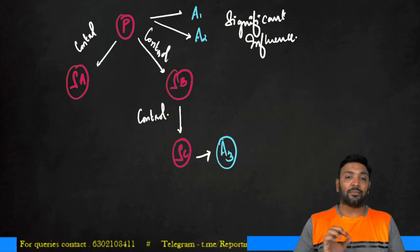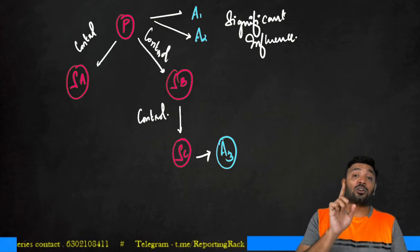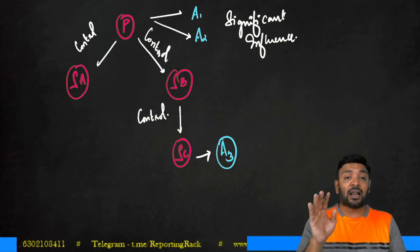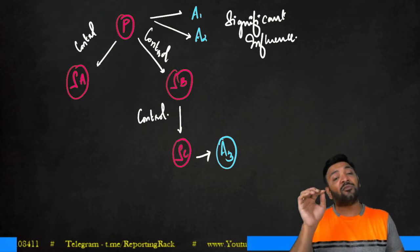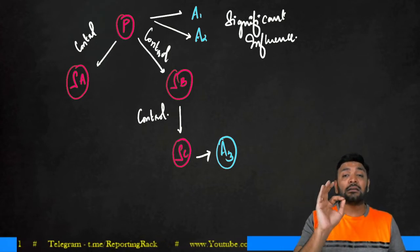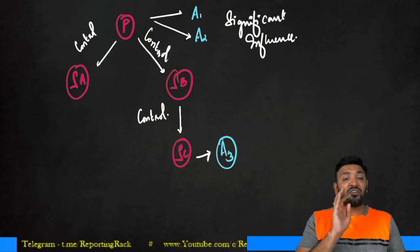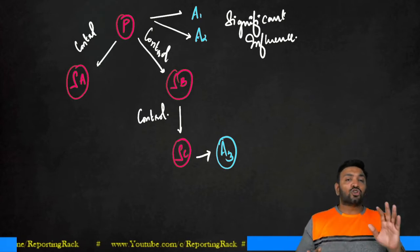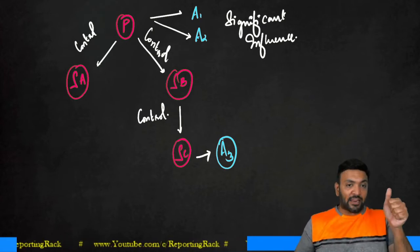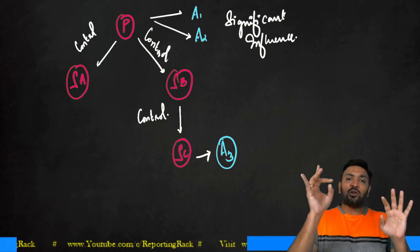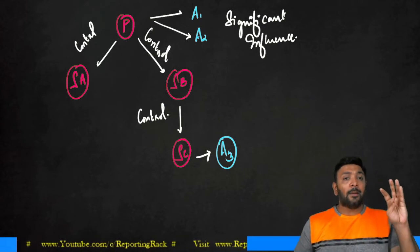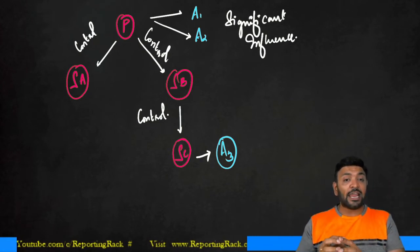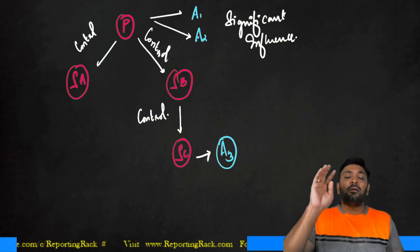Now look at SA: P has significant influence over A1, A2, and A3. If both entities are under common significant influence, you cannot say they are related parties. But if one is controlled and the other is under significant influence, there is a definite related party situation. So for SA, the related parties are P, SB, SC, A1, A2, and A3.